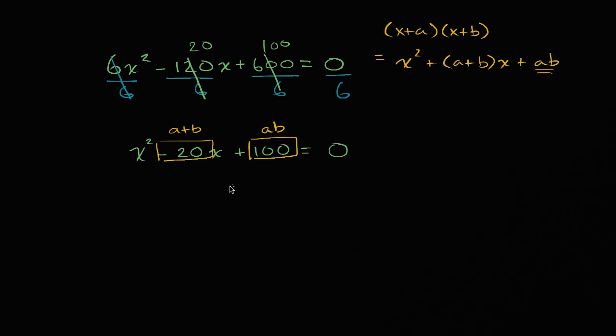So can we think of two numbers that if we take their product, we get positive 100, and if we take their sum, we get -20? Well, since their product is positive, we know that they have the same sign. So they're both going to have the same sign. So they're either both going to be positive, or they're both going to be negative, since we know that we have a positive product.